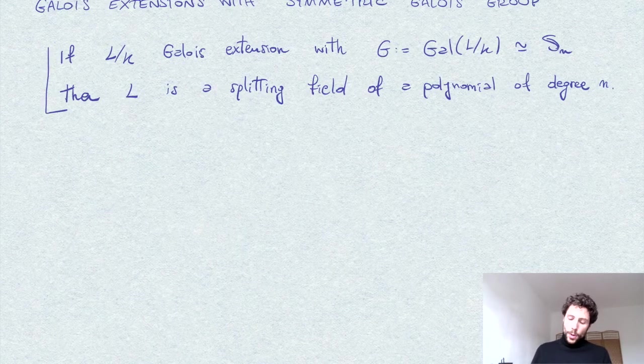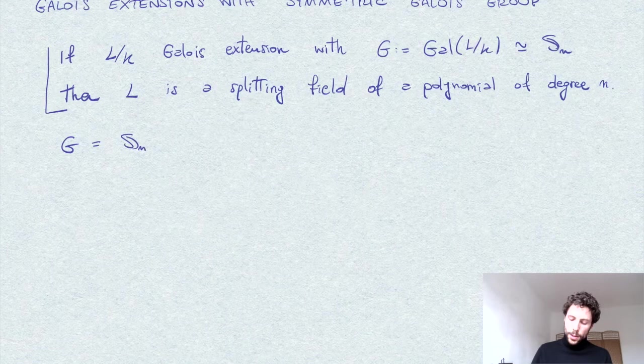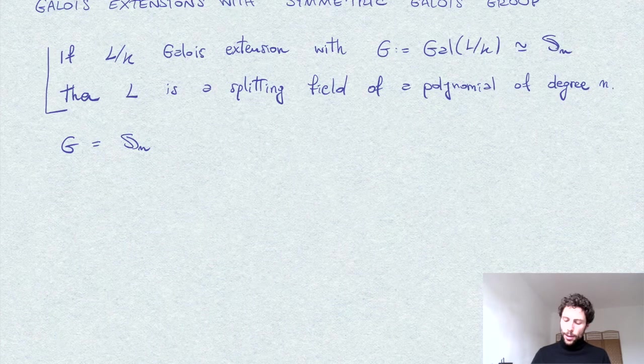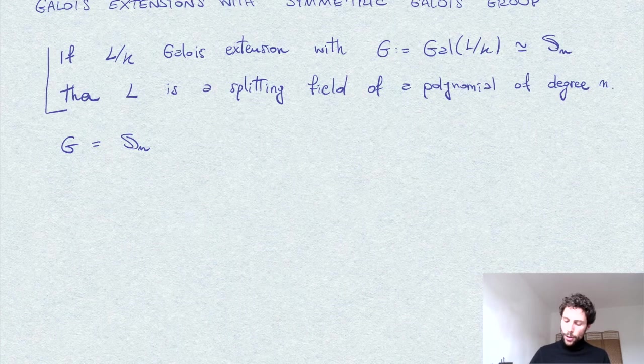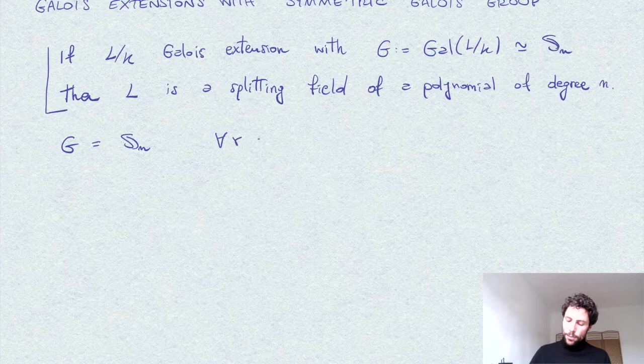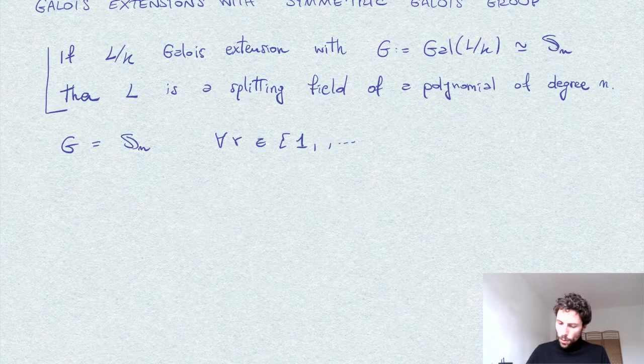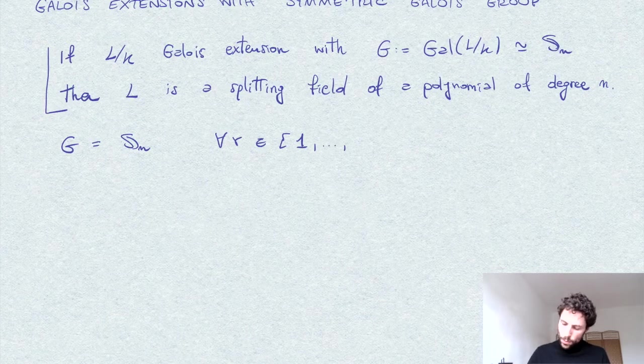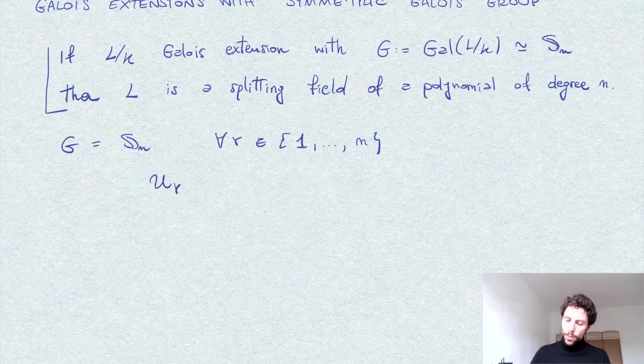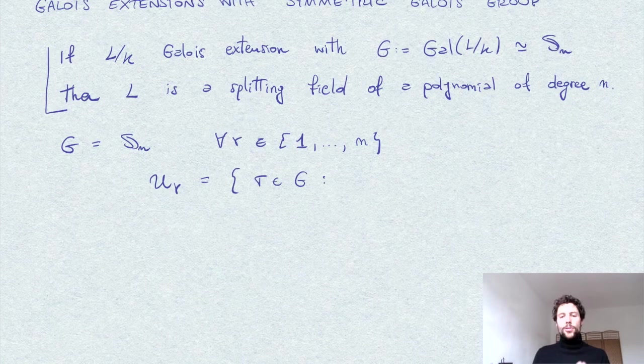So let's identify G, the Galois group, with the symmetric group. And we can consider subgroups of G which I will define pretending that G is precisely the permutation group of n letters. Say for any letter R between 1 and n, then I consider UR as a subgroup, so the subgroup of G given by elements which fix the letter R.